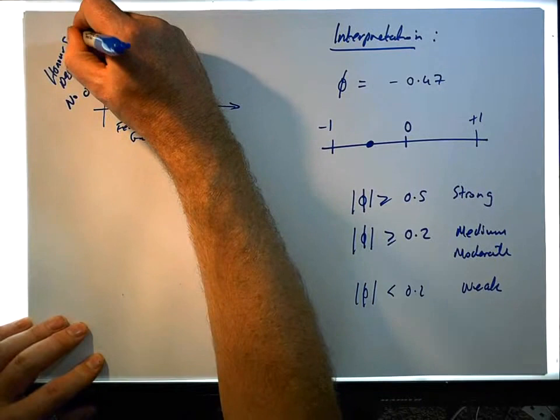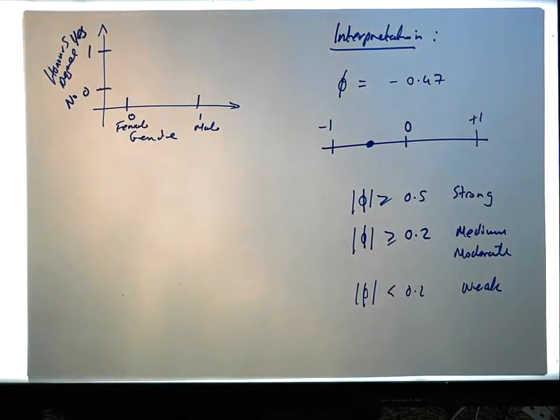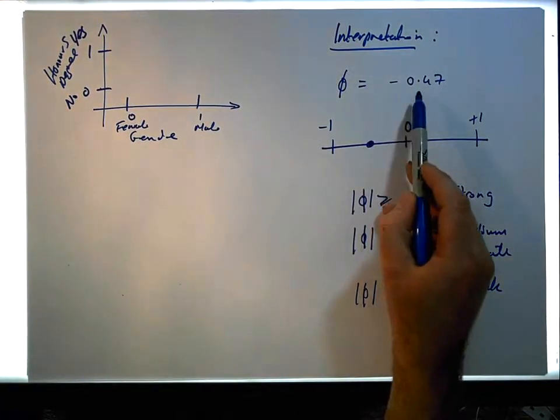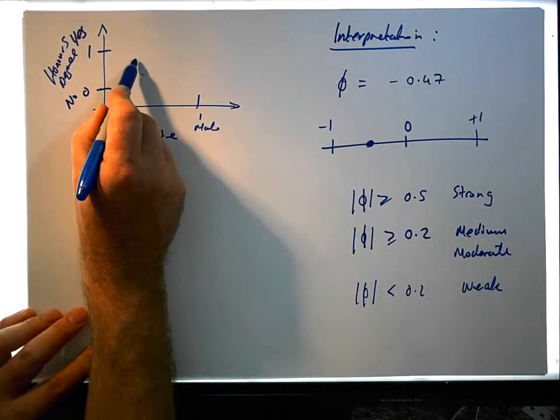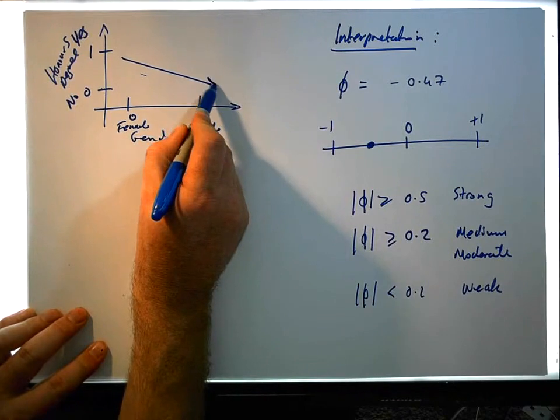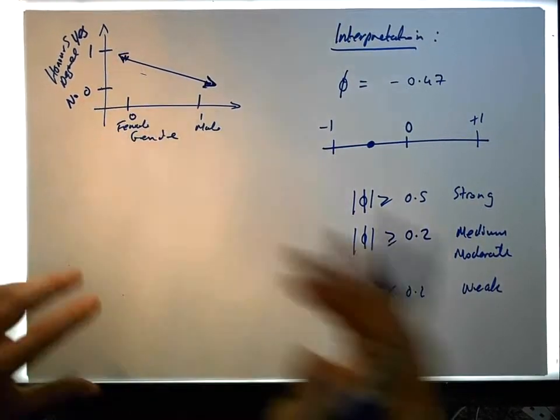So this is for no and this is for yes. Basically what we have is a negative association between them, which is indicating there's some sort of negative line going down between them.